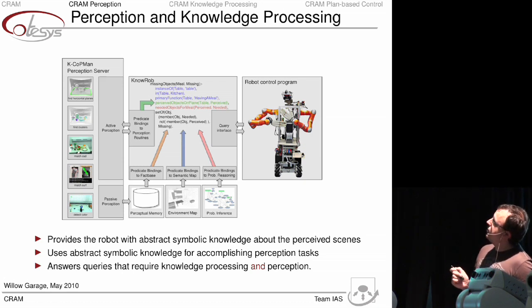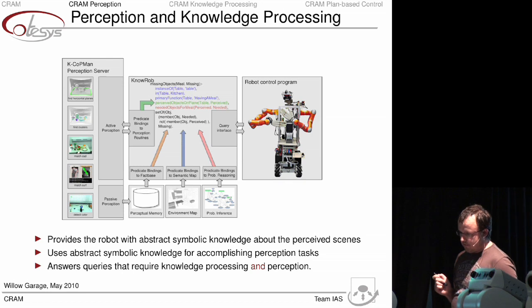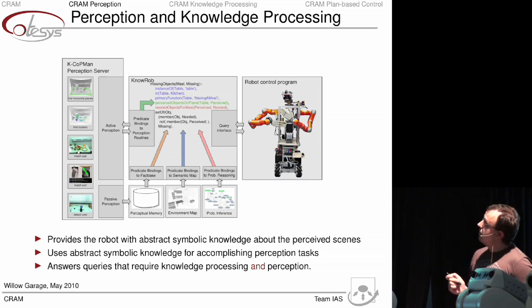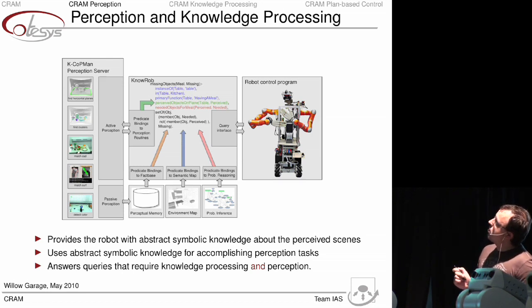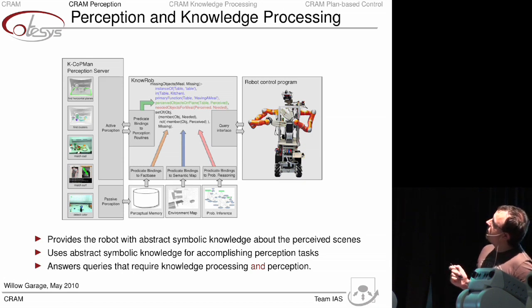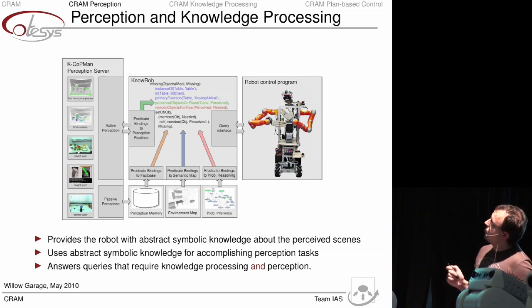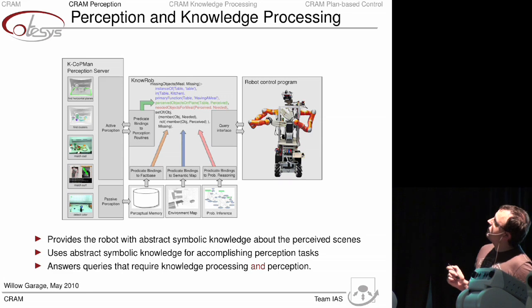That system is actually a combination of three modules: the perception module, the module no-rob which I'm going to talk about later on, and the module for the probabilistic inferences. The Prolog query listed here and colored in different colors belongs to each one of these three modules.